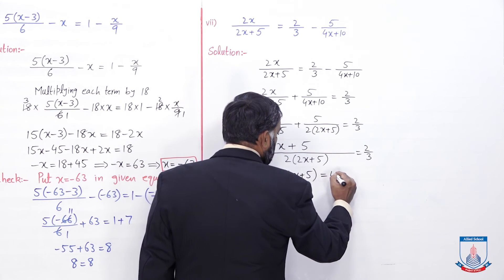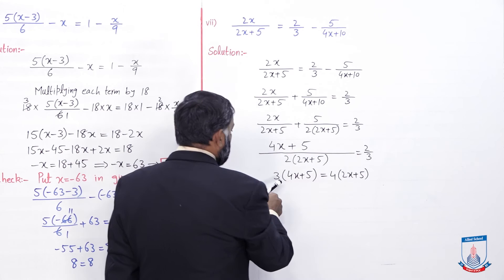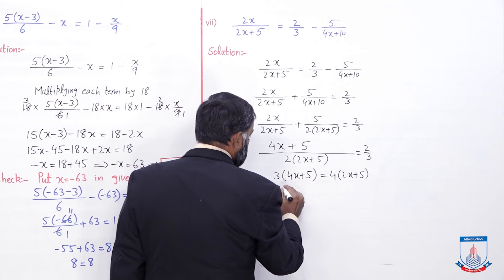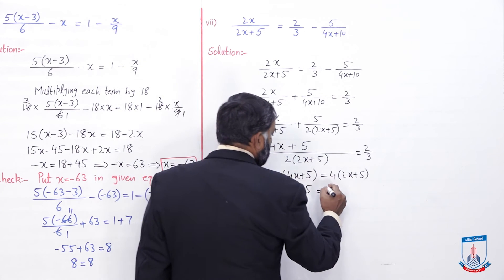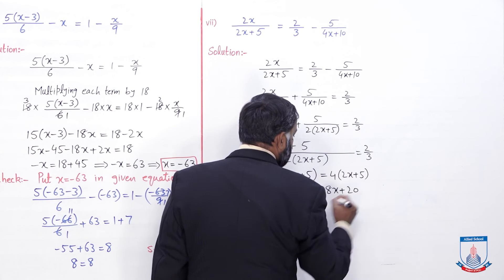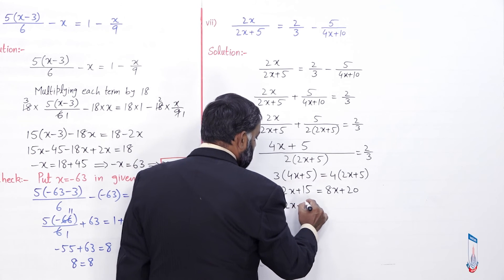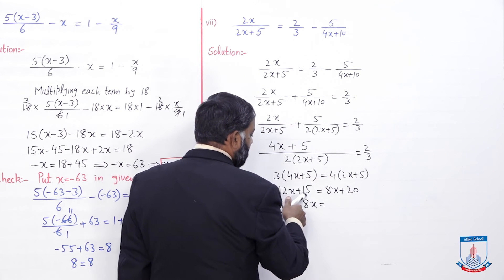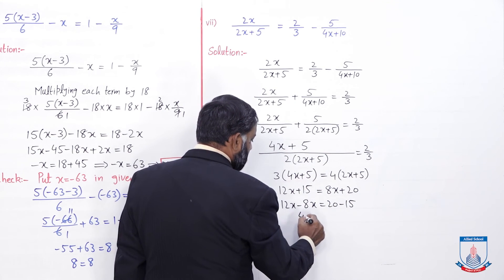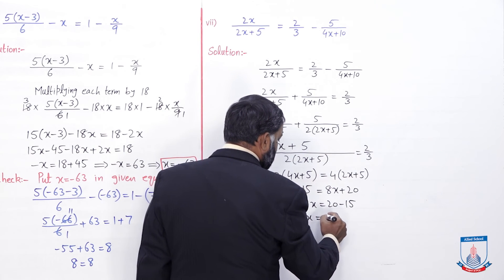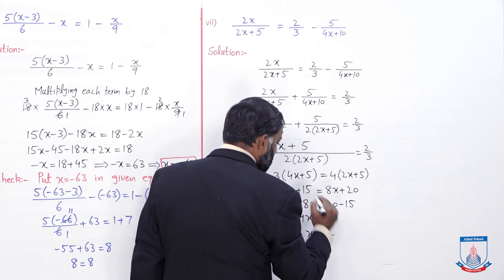Cross multiply karenge kyunki left side mein bhi ek fraction hai aur right side mein bhi fraction hai. 3 into (4x plus 5) is equal to 2 multiply by 2 into (2x plus 5), which equals 4 into (2x plus 5). Simplify karein: 12x plus 15 is equal to 8x plus 20. 8x ko left side pe lein, minus ho jayega. Plus 15, right side pe jaakar minus ho jayega. 12 minus 8 equals 4x. 20 minus 15 equals 5. To yahan se x ki value aa jayegi: 5 over 4.